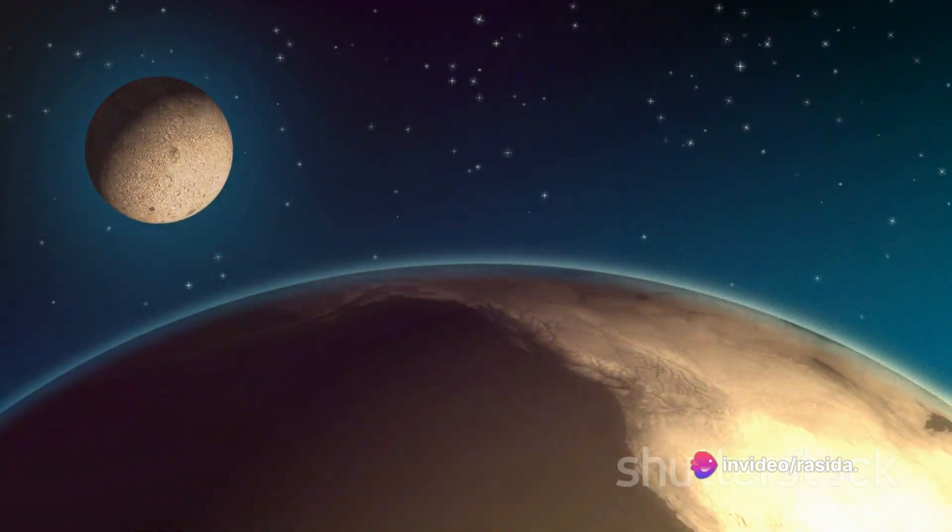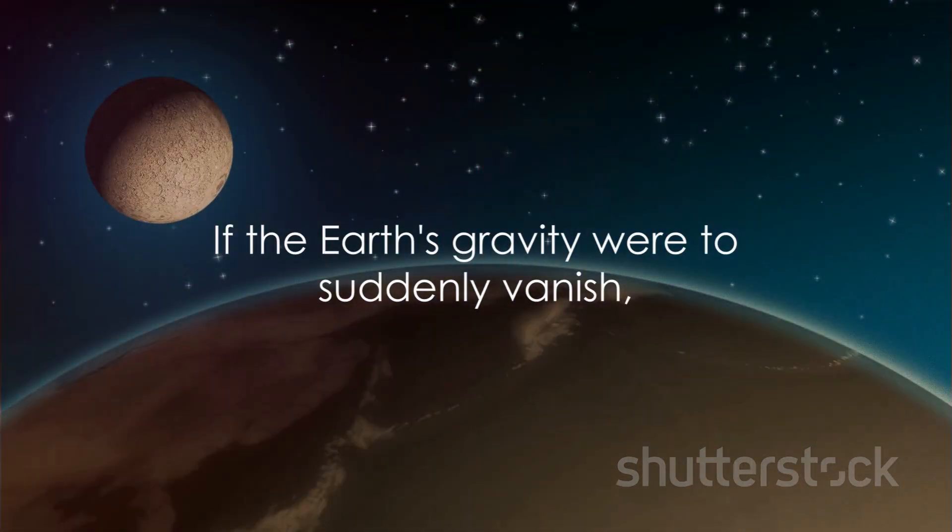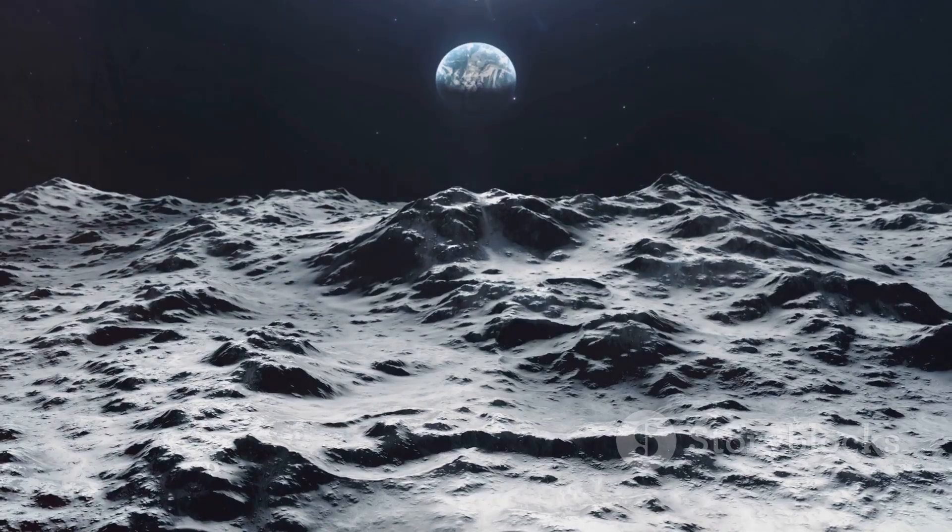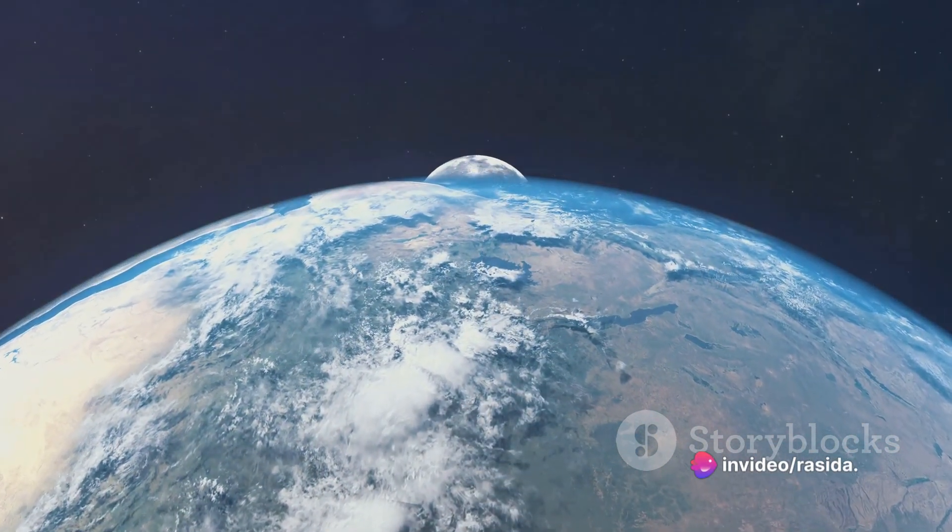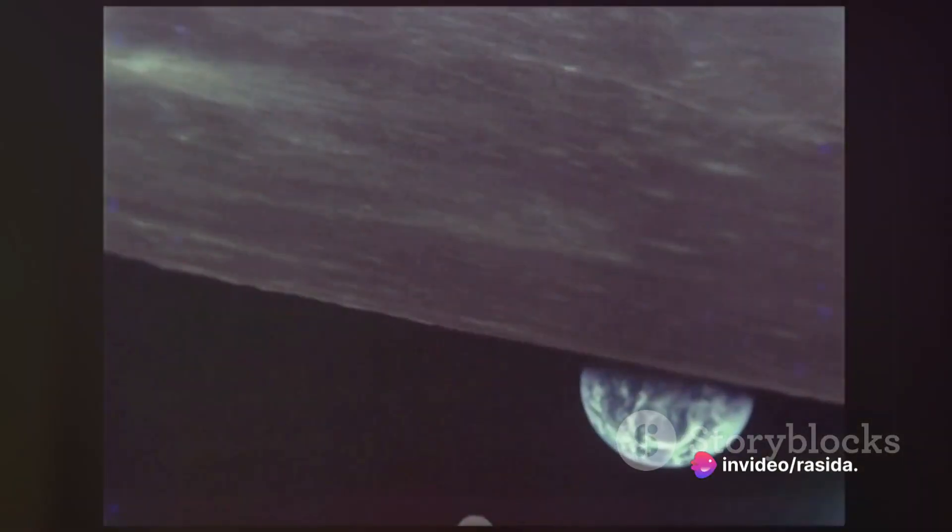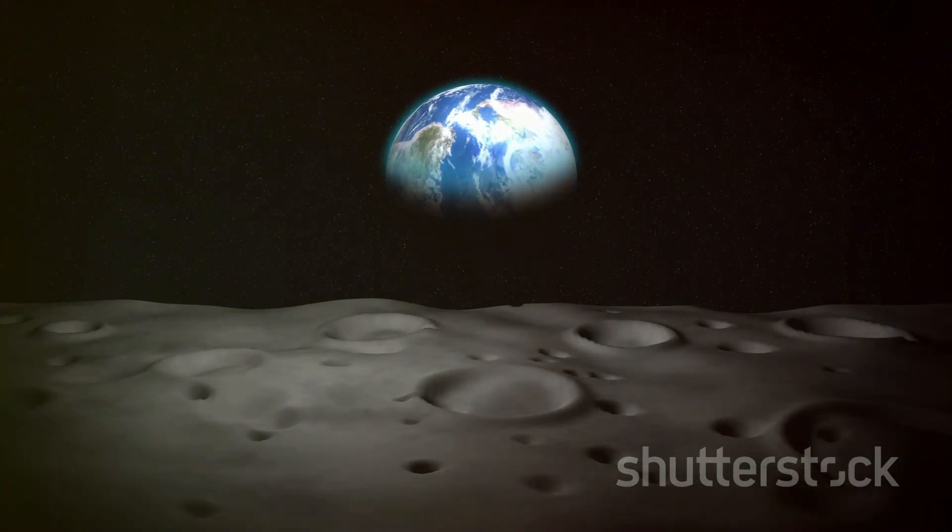If the Earth's gravity were to suddenly vanish, the moon would lose its invisible tether and drift away into space. Conversely, if the moon were to speed up, it could escape Earth's gravitational pull and fly off into the cosmos. But if the moon were to slow down, it would be drawn in by Earth's gravity and crash into us.